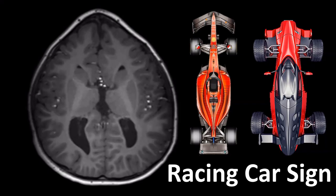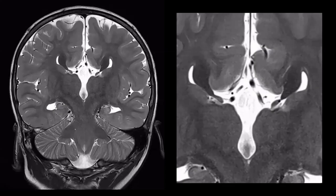In the axial plane, we get what is called the racing car sign. The third ventricle is the body of the car, and the frontal horns together with the trigone and posterior horns of the lateral ventricles correspond to the wheels. If you look at that configuration, you can recognize a racing car.